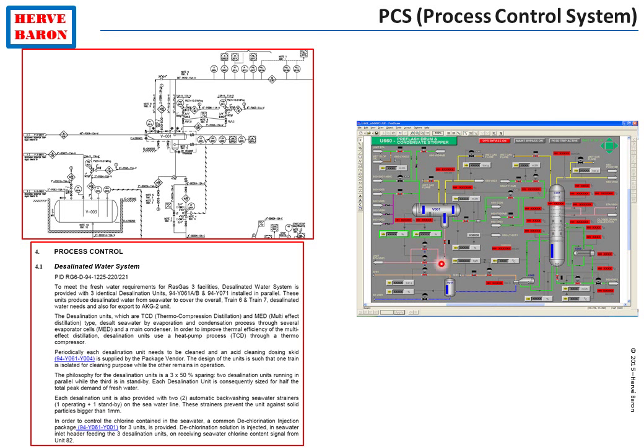The application software of the process control system is developed based on these two documents. Besides the process control system, another system is in charge of the safety of the process: the process safety system, also called emergency shutdown system, also called safety instrumented system.